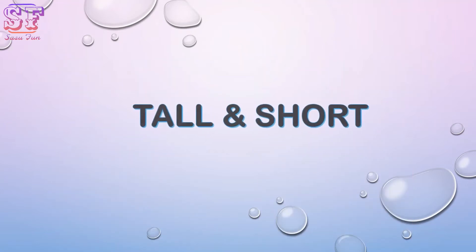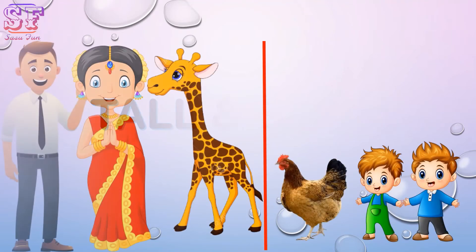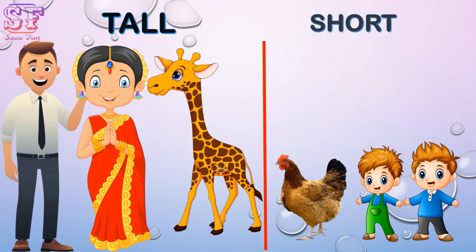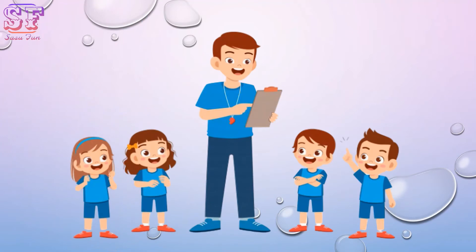Our third concept is tall and short. Tall — we are tall. Short — we are short in height. Parents and giraffe are tall, and hand and children are short.